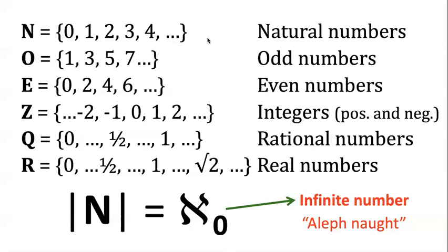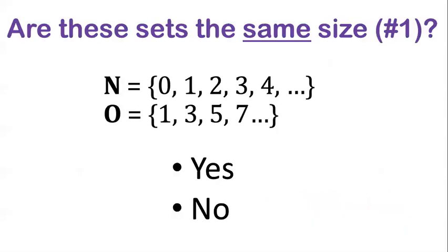So take it as definitional that aleph naught is just the size of the natural numbers. What I want you to do is think about the size of these other sets, O, E, Z, Q, and R. Are all of these the same size as the natural numbers or not? That's the fundamental question which we're going to pursue. Let's take the first version of it. What about the odd numbers? So what I want you to do is tell me whether these two sets have the same size or not. Pause your videos and see if you can figure this out.